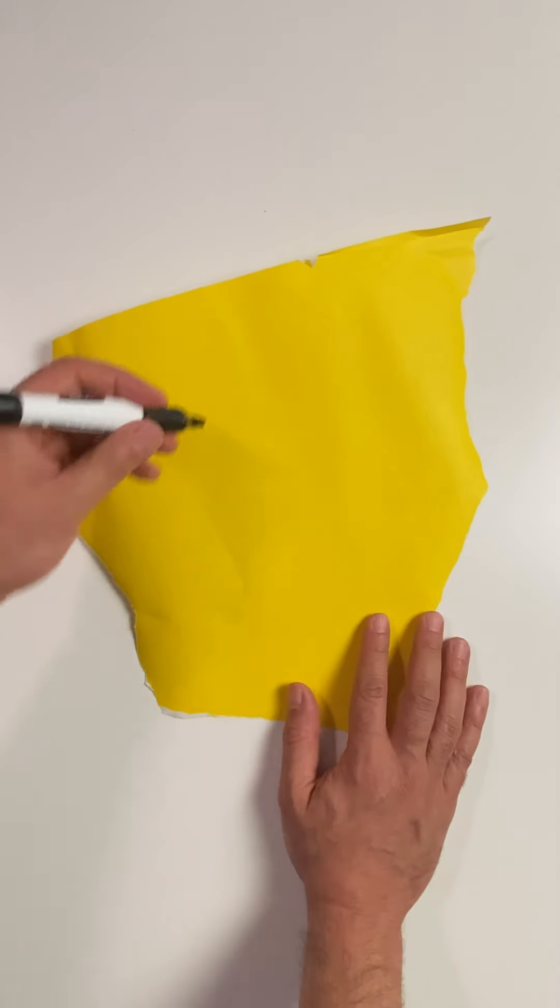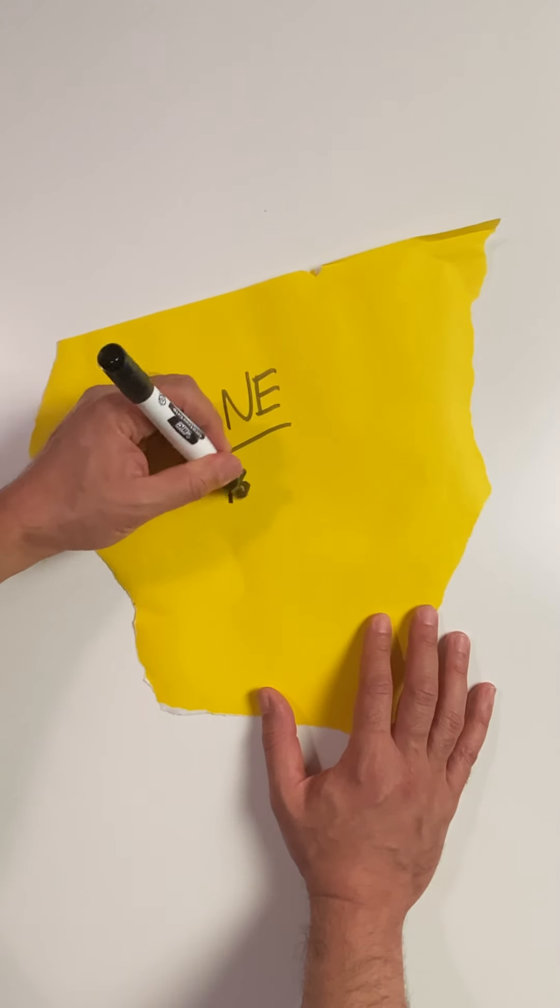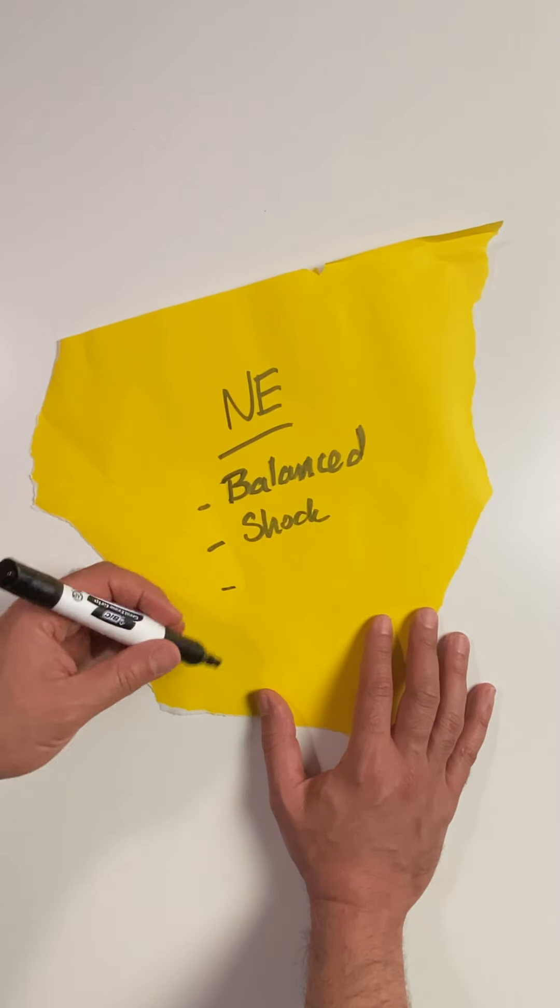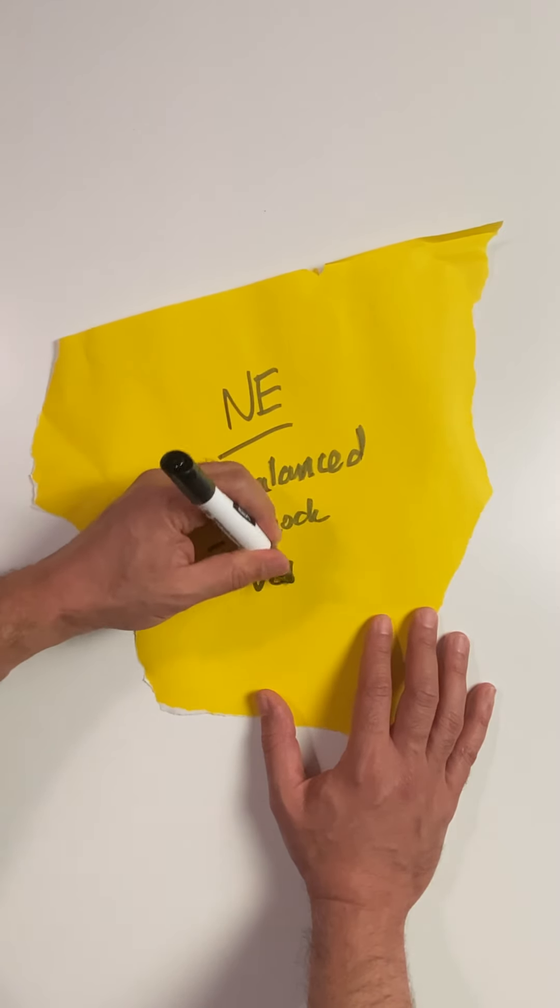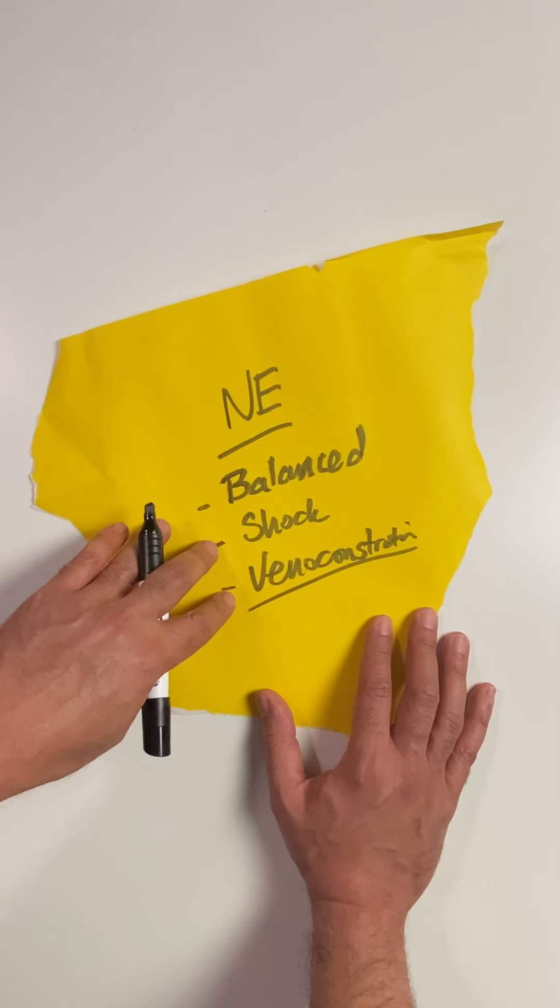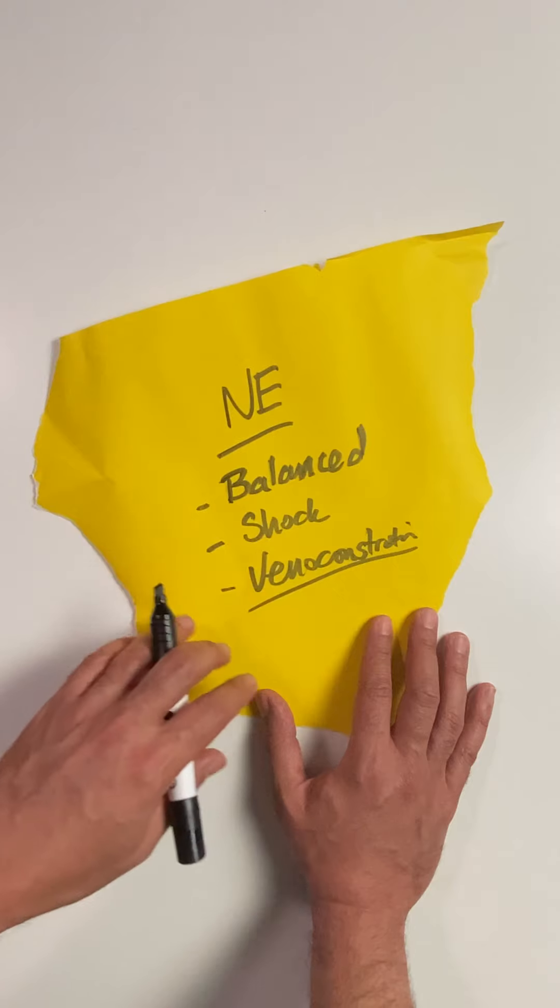So that's my love for norepinephrine. It's good because it's balanced. It's good because you can use it in a variety of shock states. But my favorite feature is that it causes venoconstriction and allows me to utilize blood that's just pooling around in patients and bring it back into the central circulation.